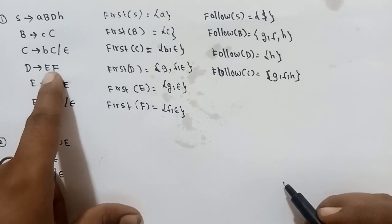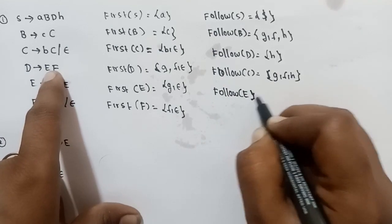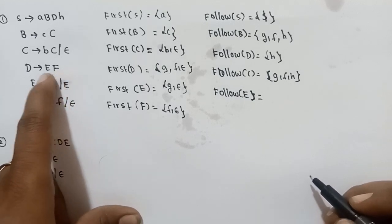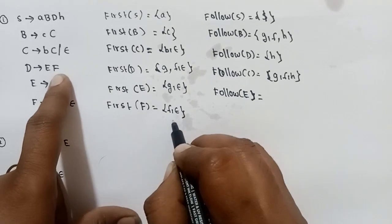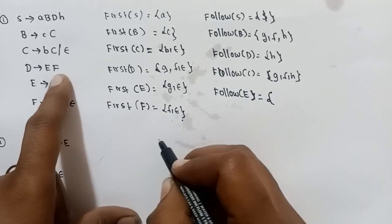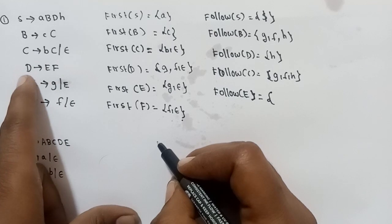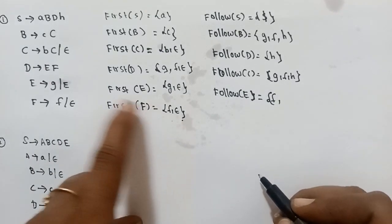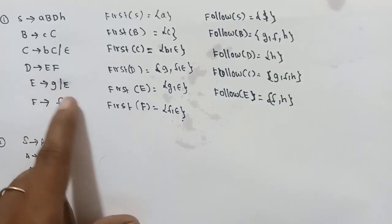Next, FOLLOW of E. Since E is a non-terminal, FOLLOW of E equals FIRST of F. Since epsilon is in FIRST of F, FOLLOW of E equals FIRST of F minus epsilon, union FOLLOW of D. FIRST of F gives {f}, so FOLLOW of E equals {f} union FOLLOW of D, giving FOLLOW of E equals {f, h}.